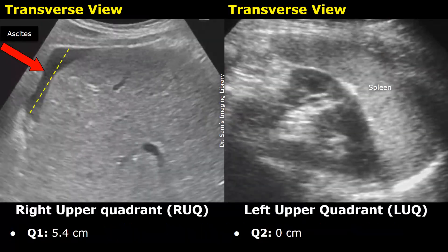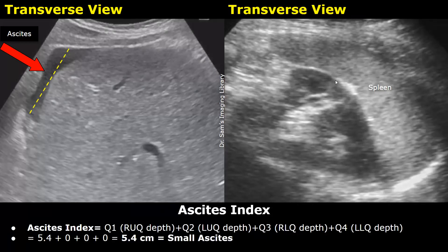In this example, there is a small fluid collection outside the liver in the right upper quadrant, which measured 5.4 centimeters. No fluid was found in the left upper quadrant, so the Q2 value will be 0. No fluid collections were found in the left and right lower quadrants, so Q3 and Q4 values are also 0. The Ascites index will be equal to 5.4 plus 0 plus 0 plus 0, which equals 5.4 centimeters. This value is classified as mild Ascites because it is less than 10 centimeters.